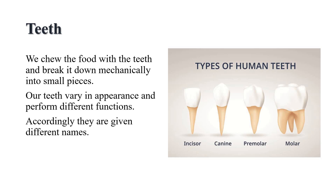In humans, teeth grow twice in their lifetime. The first set of teeth grows during infancy and they fall off at the age between six to eight years. These are termed milk teeth. The second set that replaces them are the permanent teeth. The permanent teeth may last throughout life or fall off during old age or due to some dental diseases. We chew food with the teeth and break it down mechanically into small pieces.